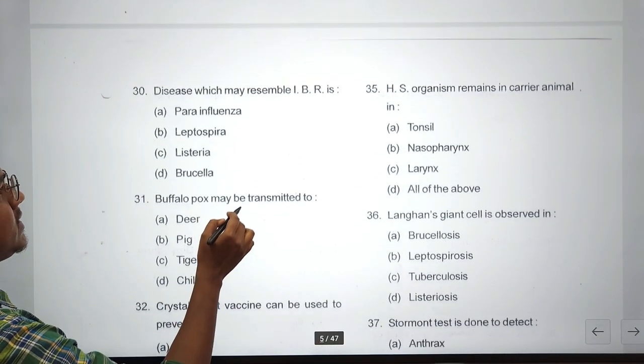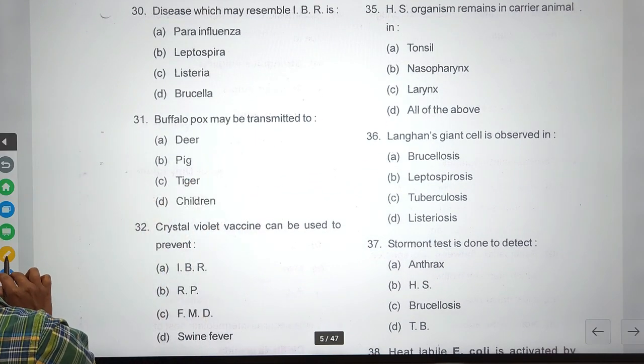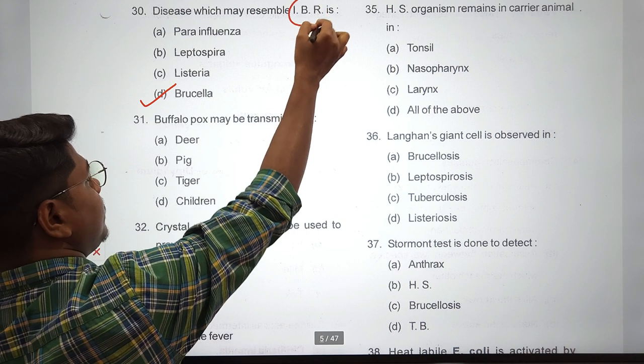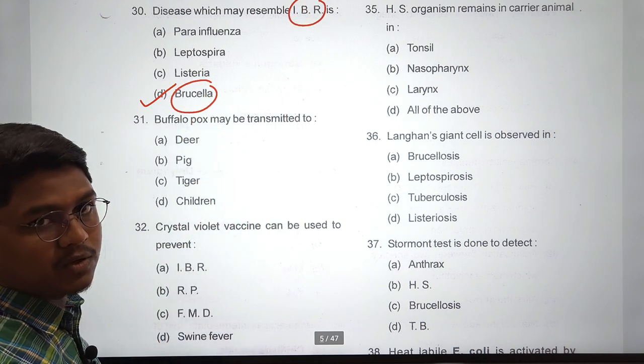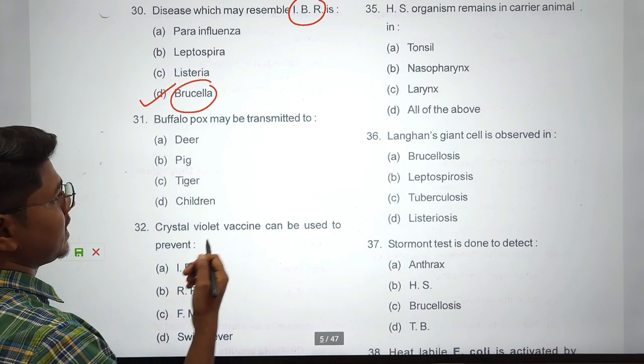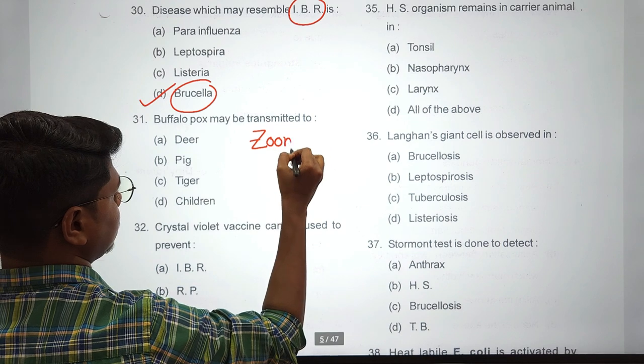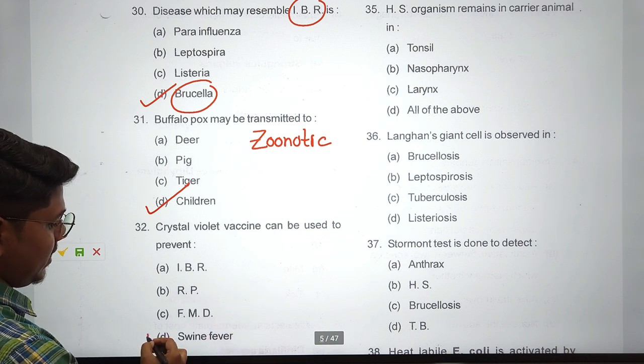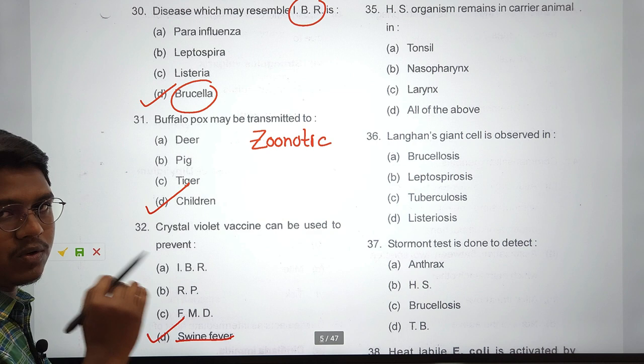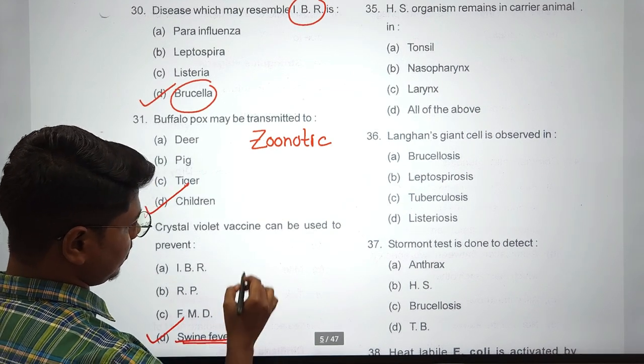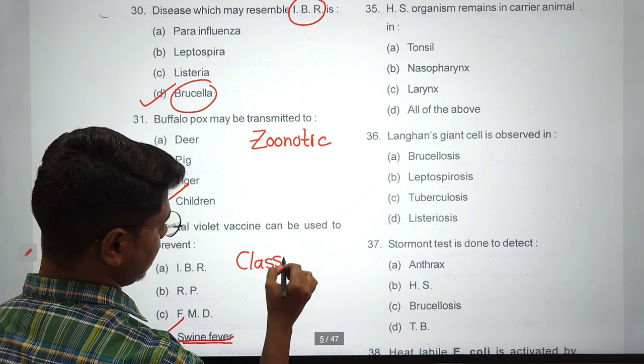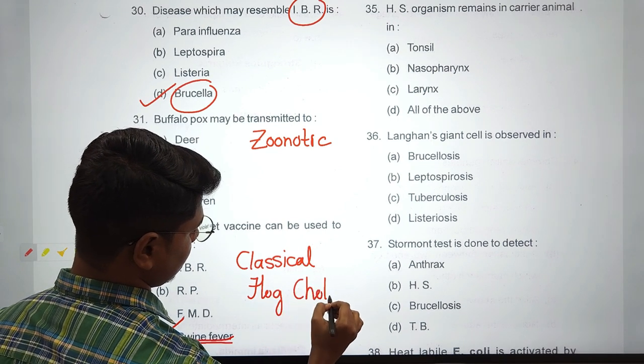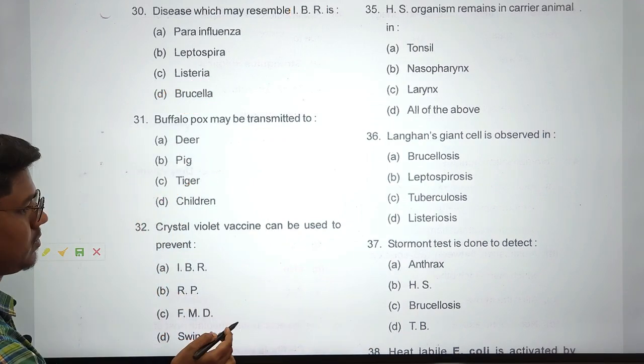PPR was first detected in India in Tamil Nadu in 1987. PPR virus has maximum affinity to lymphoid tissue. Specific proteins isolated from bluetongue virus are VP2 and VP5 - all of the above. Popular form of IBR (infectious bovine rhinotracheitis) remains along with respiratory form. Disease which may resemble IBR - I have a little doubt in this question. Most probably it is brucellosis because in both IBR and brucella you'll find multiple animals undergoing abortion. Buffalo pox may be transmitted to humans - this is a zoonotic disease.